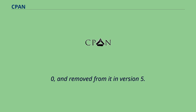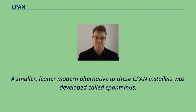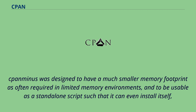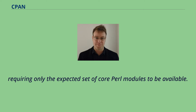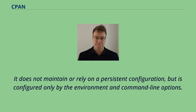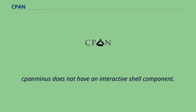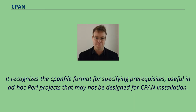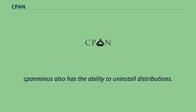CPAN Plus was removed from the Perl core in version 5.20.0. A smaller, leaner modern alternative to these CPAN installers was developed called CPAN Minus. CPAN Minus was designed to have a much smaller memory footprint, as often required in limited memory environments, and to be usable as a standalone script such that it can even install itself, requiring only the expected set of core Perl modules to be available. It is also available from CPAN as the module App::cpanminus. It does not maintain or rely on a persistent configuration, but is configured only by the environment and command line options.